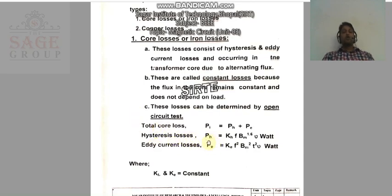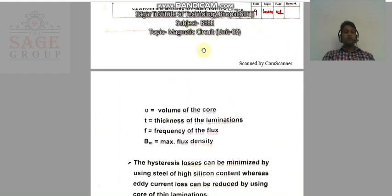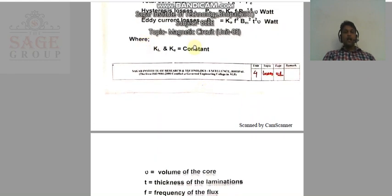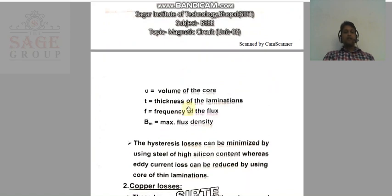Hysteresis loss is denoted by pH and equals KH times F times BM to the power 1.6 times V watts, where V is the volume of the core, KH is a constant, F is the frequency of the flux, and BM is the maximum flux density.